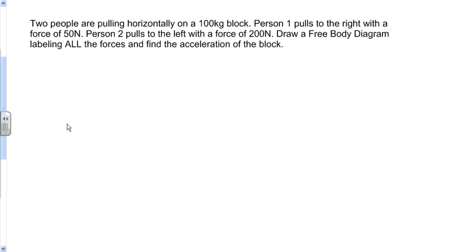Here's the problem. We have two people pulling horizontally on a 100kg block. Person 1 pulls to the right with a force of 50 N. Person 2 pulls to the left with a force of 200 N. We're asked to draw a free body diagram labeling all the forces and find the acceleration of the block.